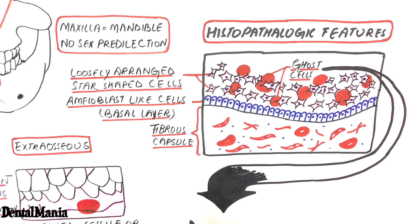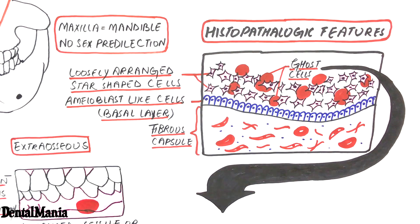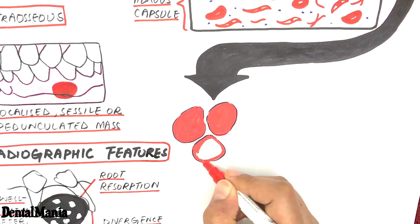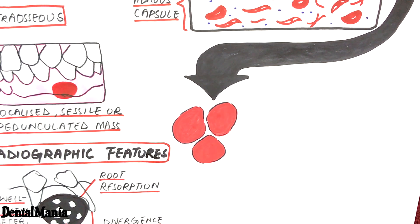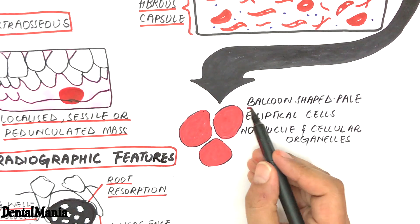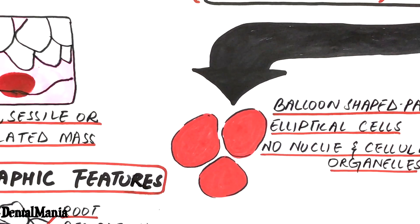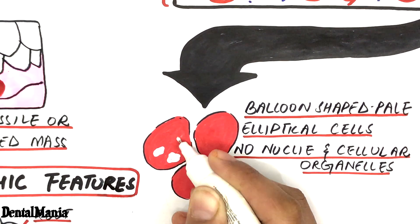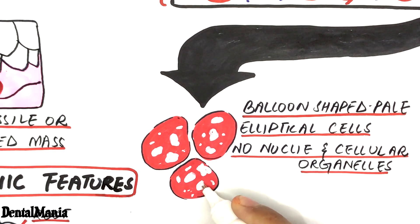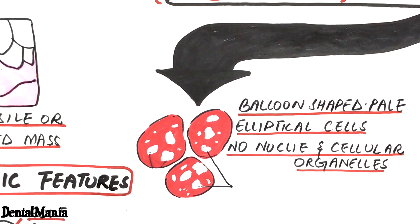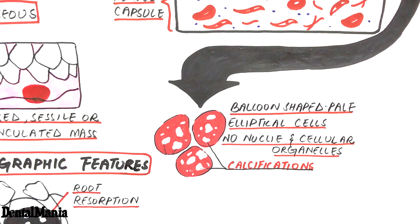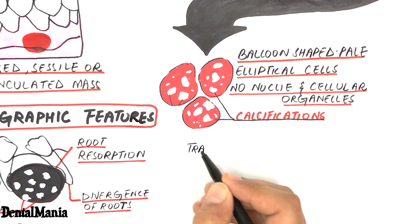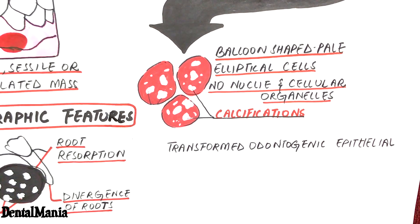Ghost cells are balloon-shaped, elliptical, and pale eosinophilic cells that have lost their nuclei and have a clear cytoplasm with no cellular organelles. Calcifications within these cells are common. The cells are believed to be transformed odontogenic epithelial cells, and the mechanism of this transformation is still unclear and controversial.